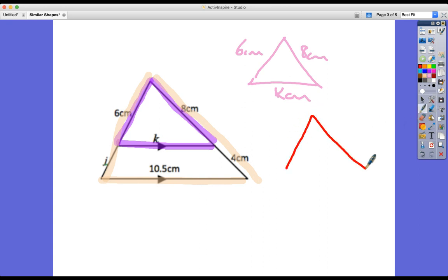So this one is six plus j centimeters. Let's put that in brackets. This is eight plus four, so this is 12 centimeters. And this is 10.5 centimeters. Now, why do we know that they are?